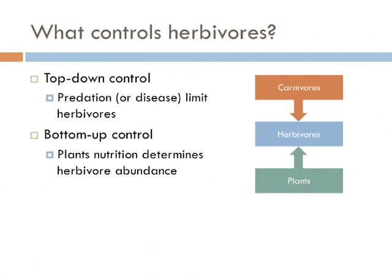We've discussed how predators control the populations of herbivores — this is known as the top-down control of herbivores. But herbivores can also be controlled by their food supply, plants, and this is known as bottom-up control. In reality, herbivores are controlled by a combination of these factors.